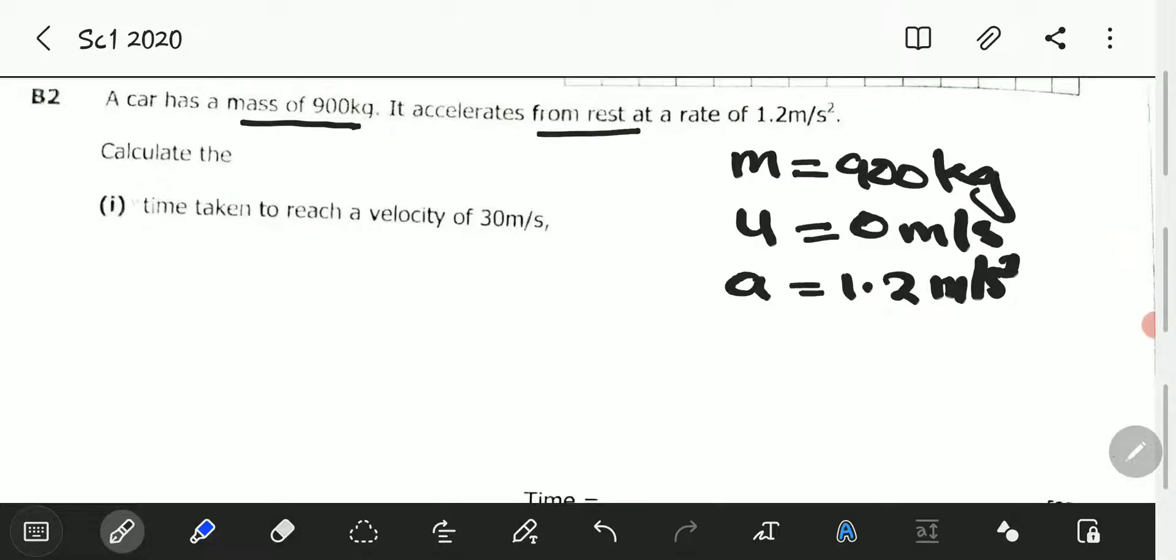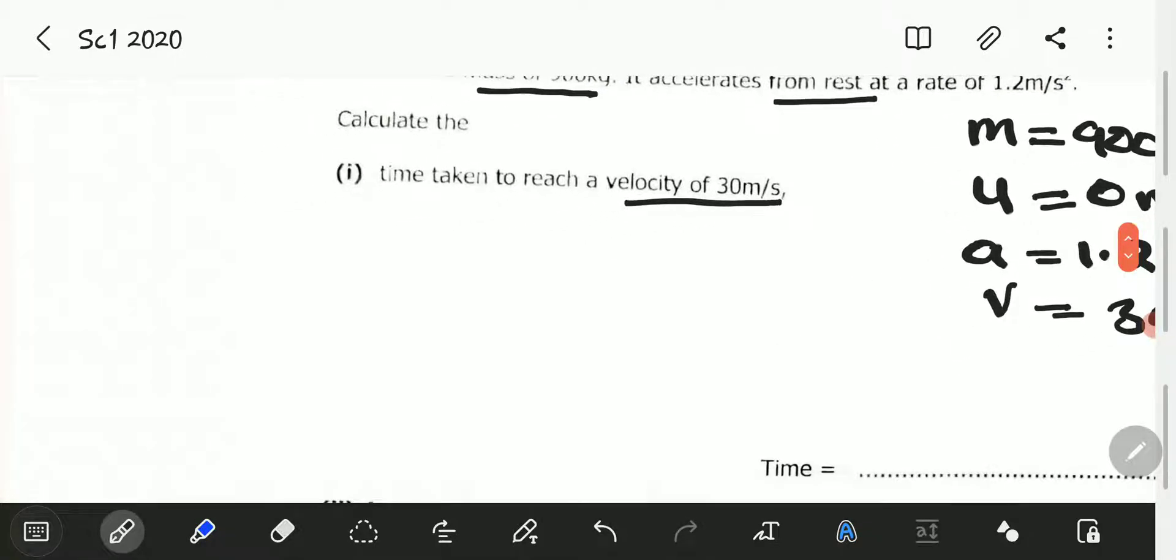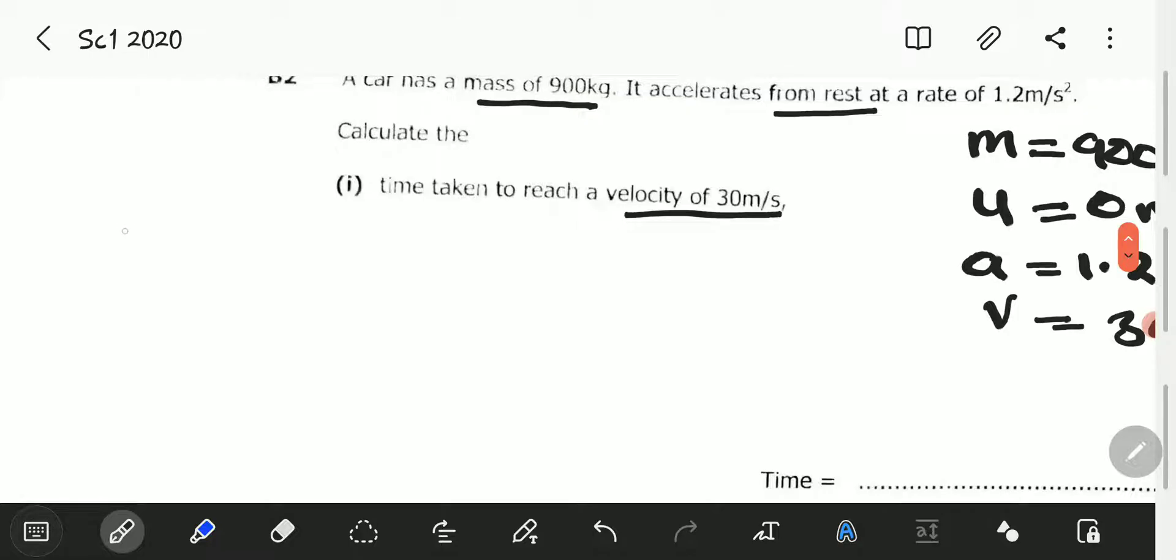They're asking to calculate the time taken to reach a velocity of 30 meters per second. Reach meaning after the acceleration, the car had attained this final velocity, so V is equal to 30 meters per second. That is our data.